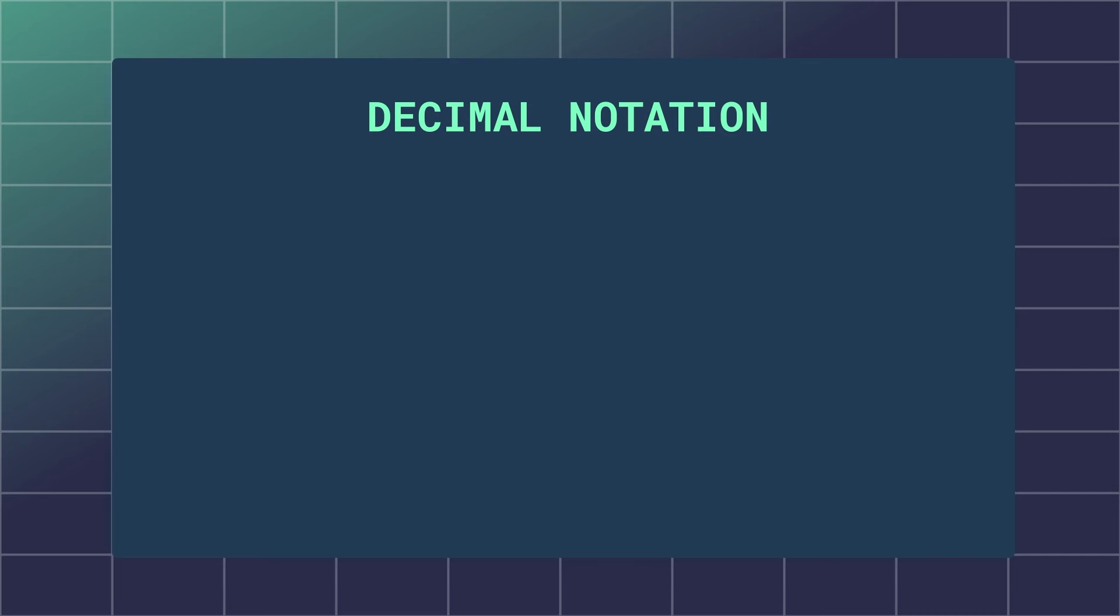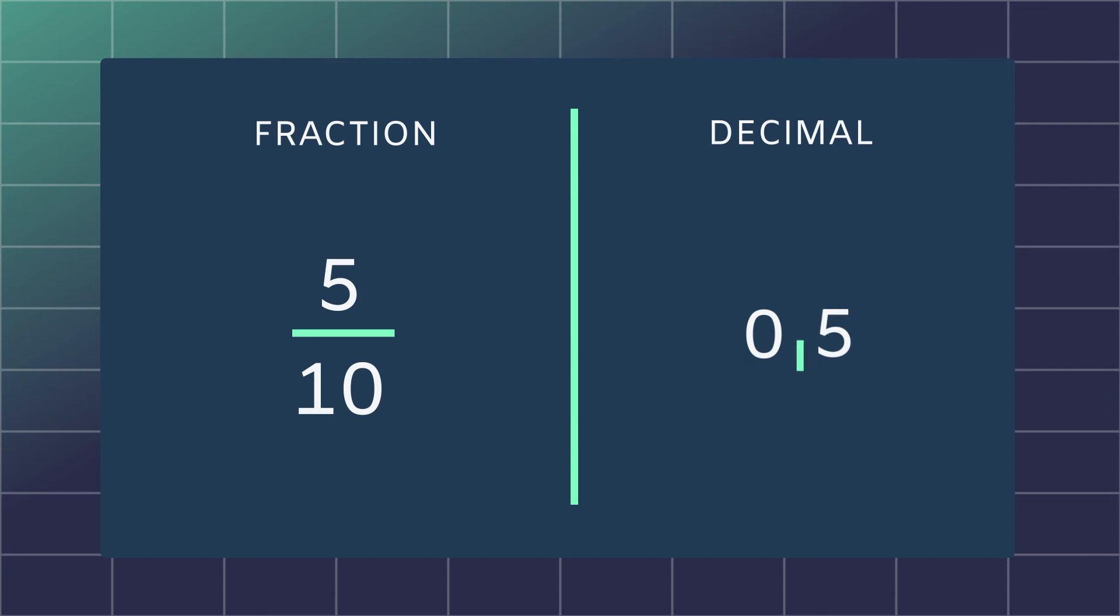To keep it simple, decimal notation means writing a fraction as a decimal point and a number. For example, five tenths can be written as 0.5.